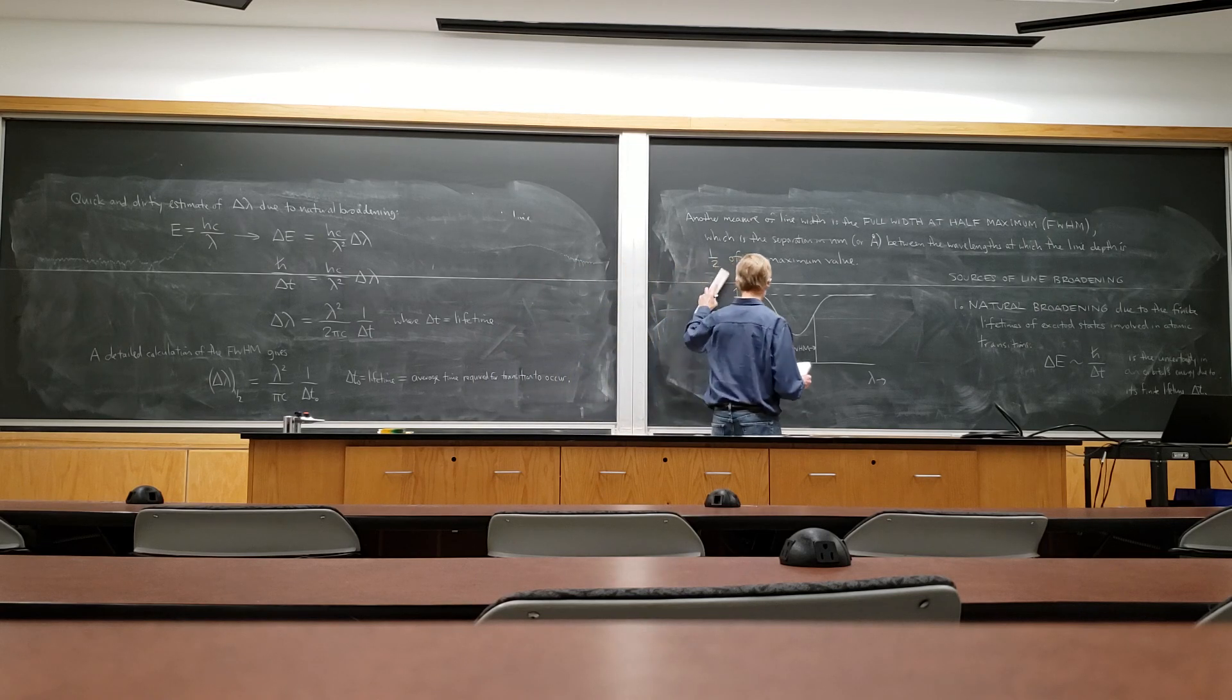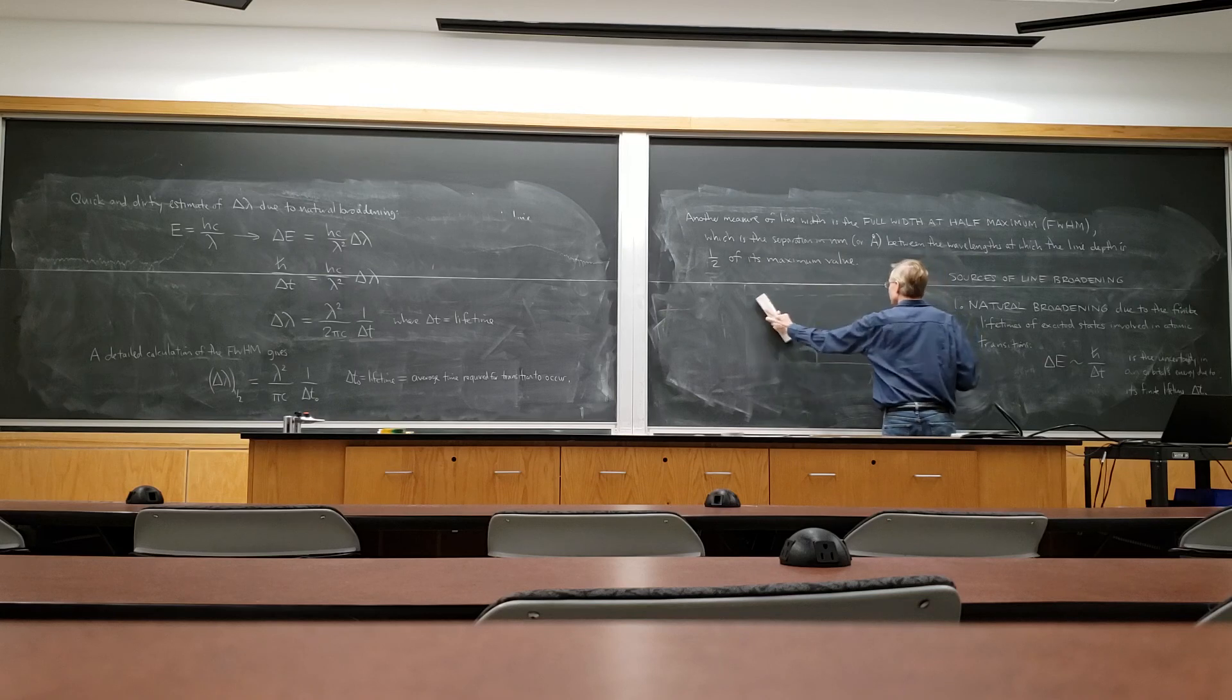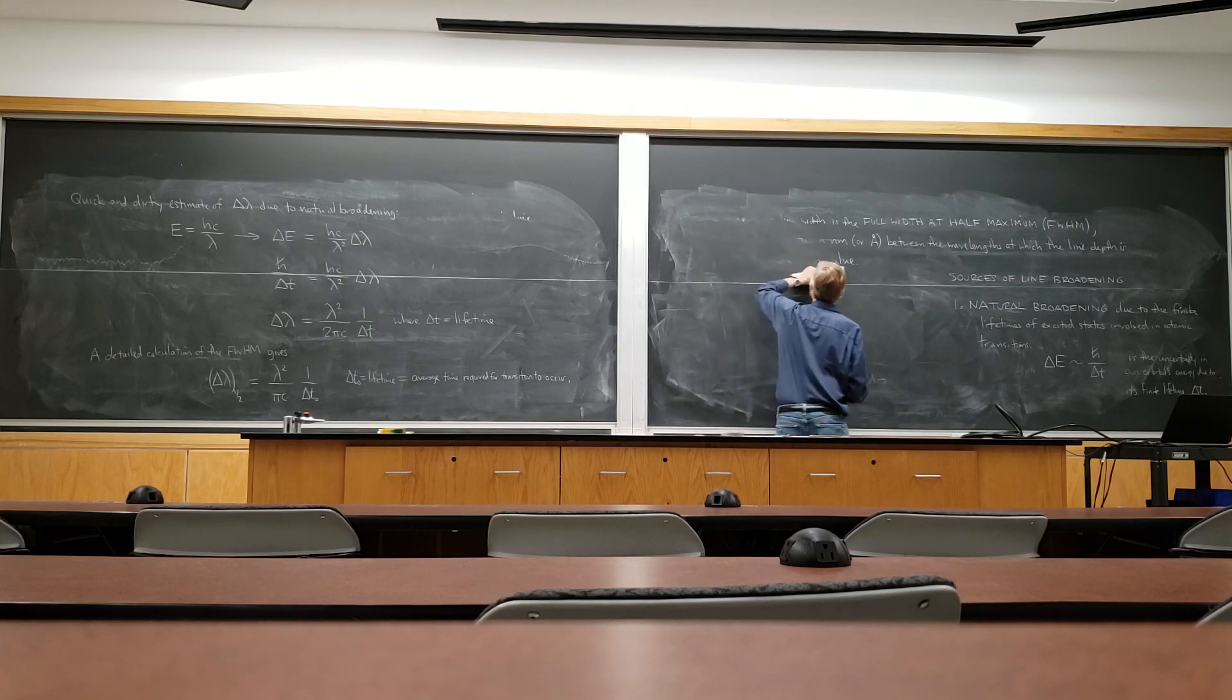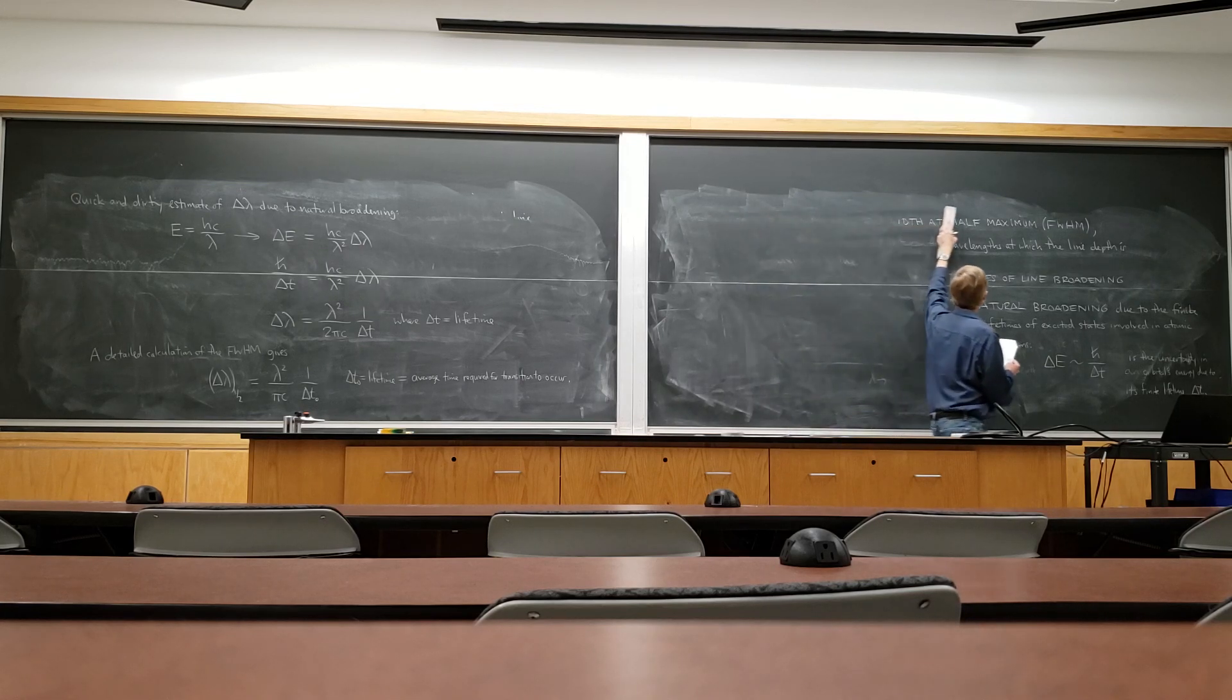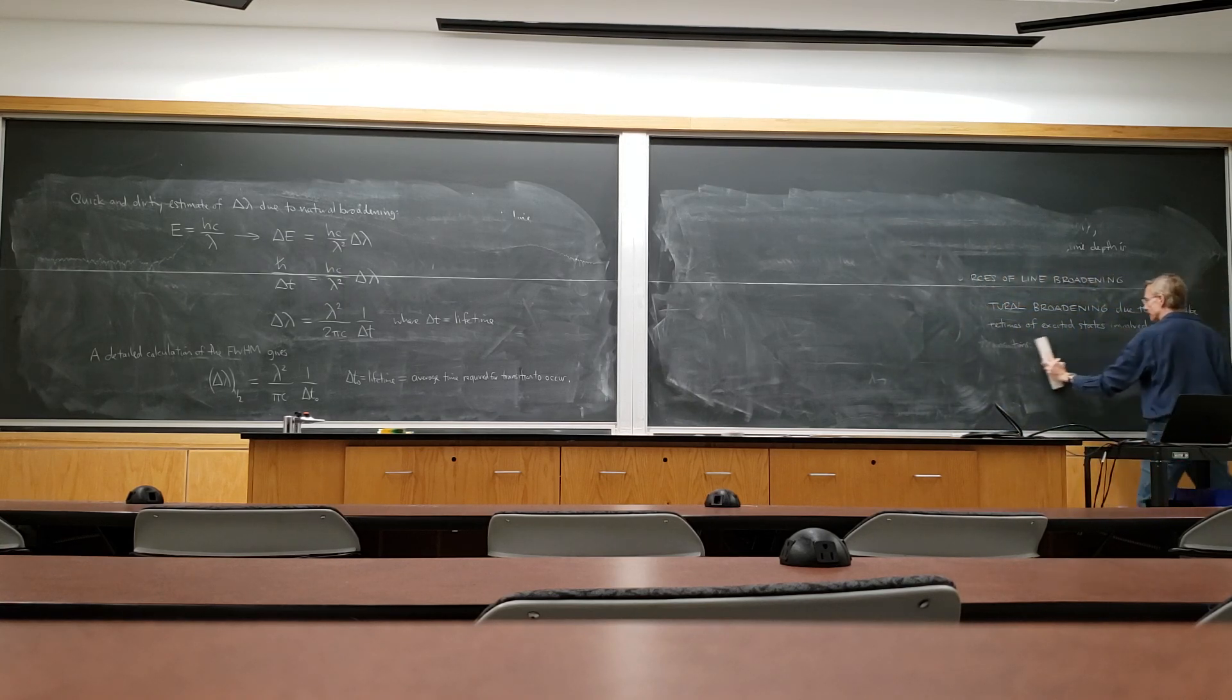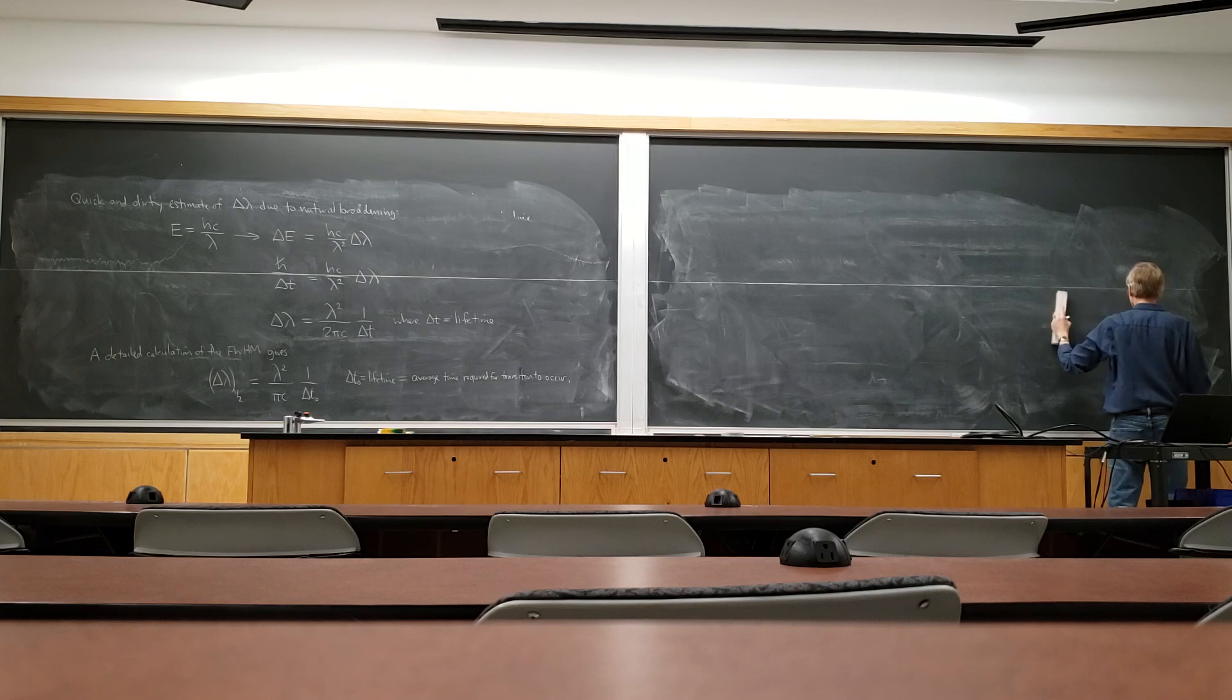And we'll finish by saying what it is for the hydrogen alpha line, the 3 to 2 transition. And then we'll read for next time talking about other sources of broadening. But what we're about to find out is that natural broadening doesn't broaden lines very much. It's usually other sources of broadening like Doppler broadening that are the main contributors.